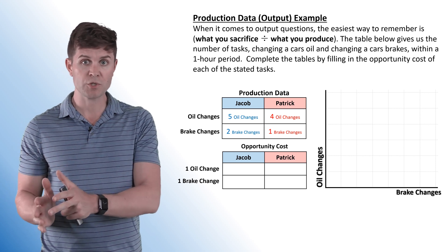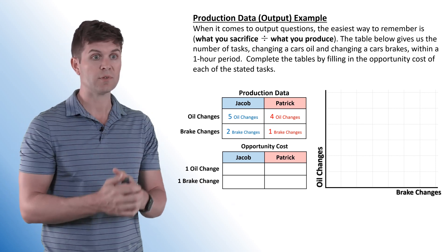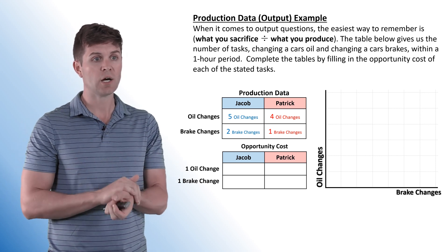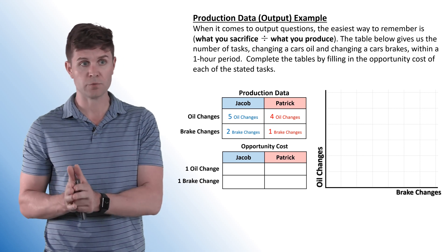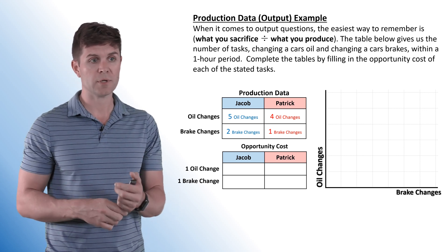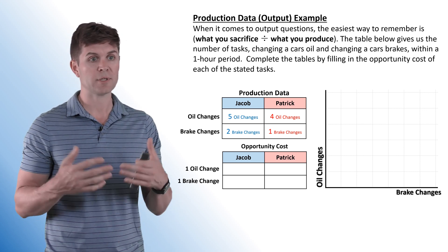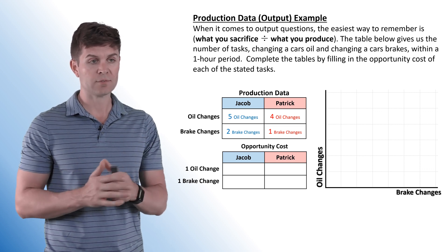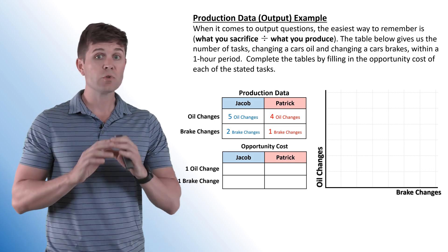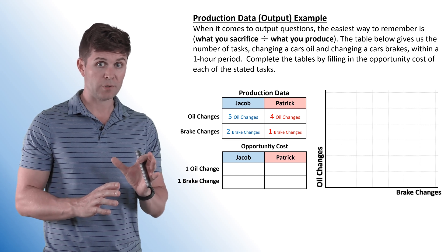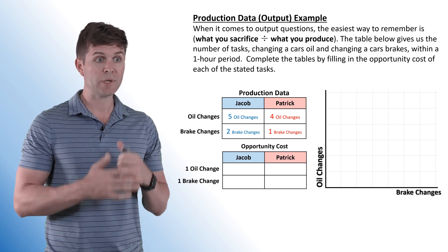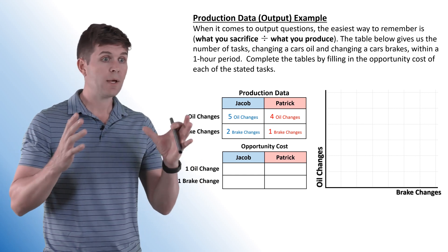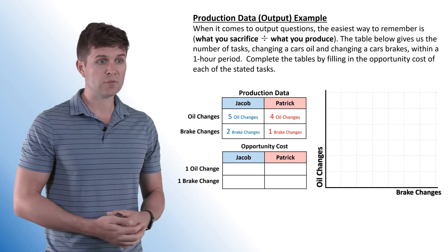what you sacrifice divided by what you produce. The table below gives us a number of tasks — changing a car's oil and changing a car's brakes — within a one-hour period. Complete the tables by filling in the opportunity cost of each stated task. So the first thing we're going to do is plot these production possibility frontiers. We get the information: they're working at a mechanic shop with oil changes and brake changes.